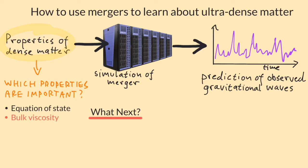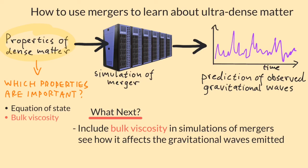Now, what do we do next? Firstly, we need to include the bulk viscosity in our simulations of mergers. Up to now it's been ignored, but it can damp out density oscillations really fast, and we need to see if that affects our predictions of the gravitational waves emitted in mergers.